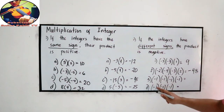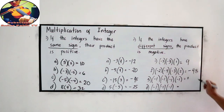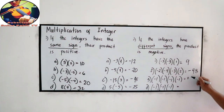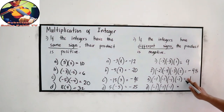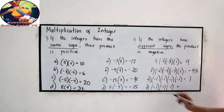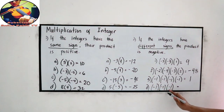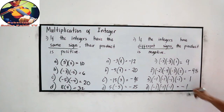For the next problem, count the negatives: 1, 2, 3, 4 — that is even, so the answer is positive. Positive 1 times 1 times 1 times 1 is positive 1, or simply 1. For the last: count the negatives — 1, 2, 3 — that is odd, so the answer is negative. Negative 1 times 1 times 1 is negative 1.